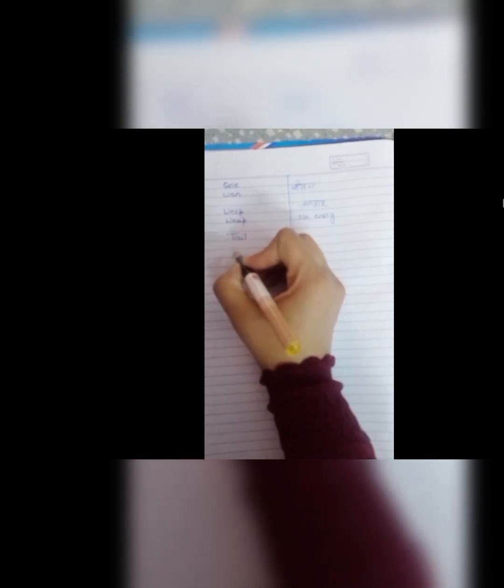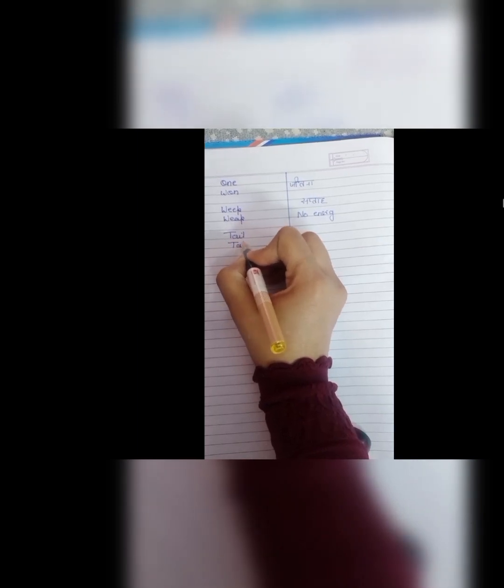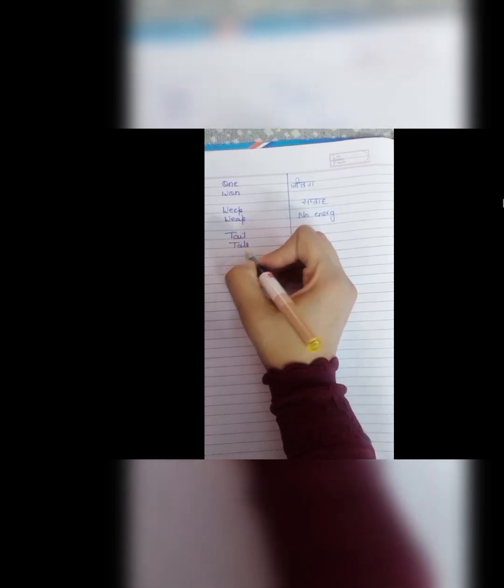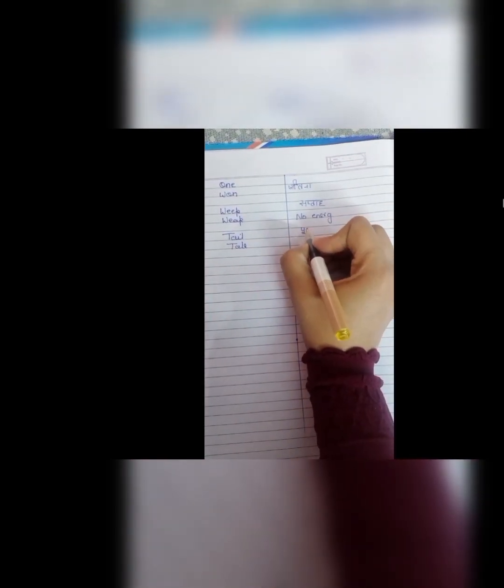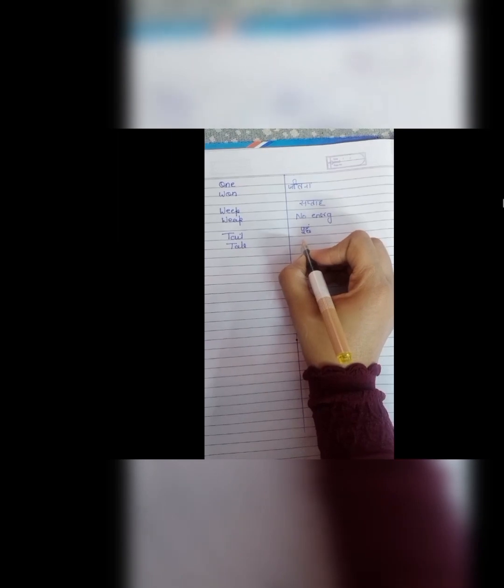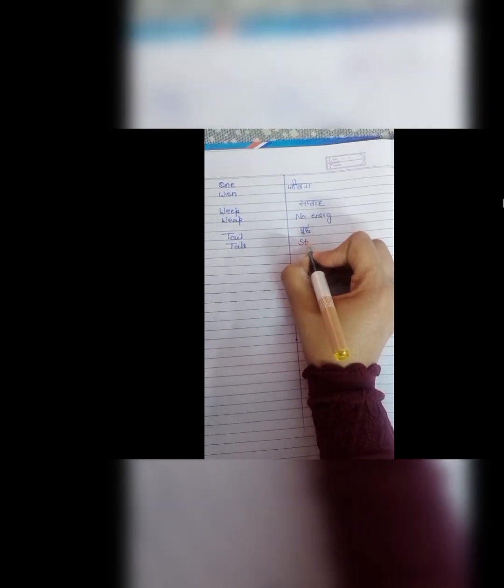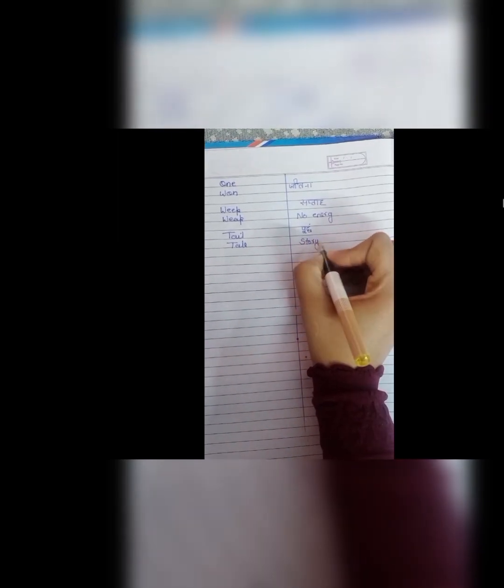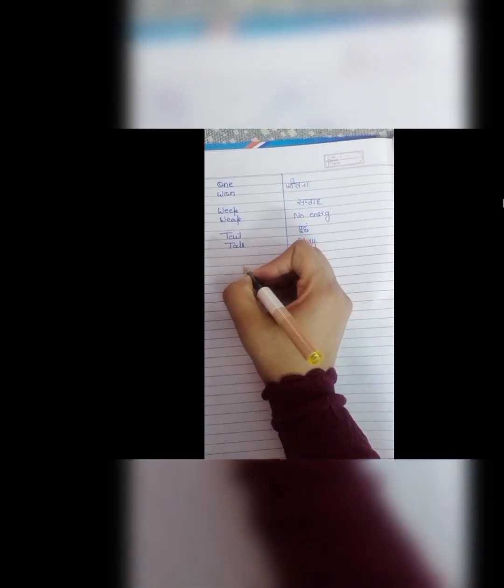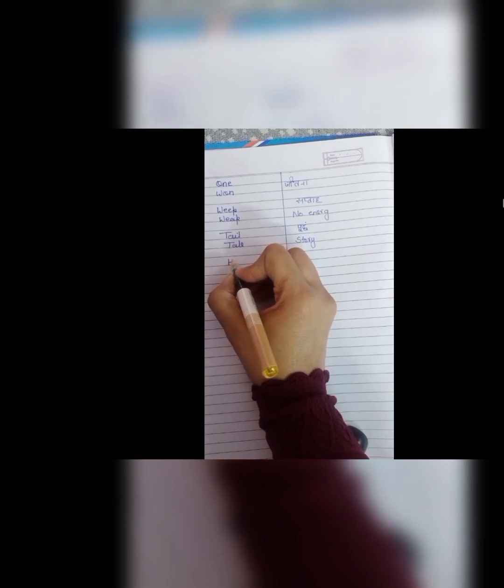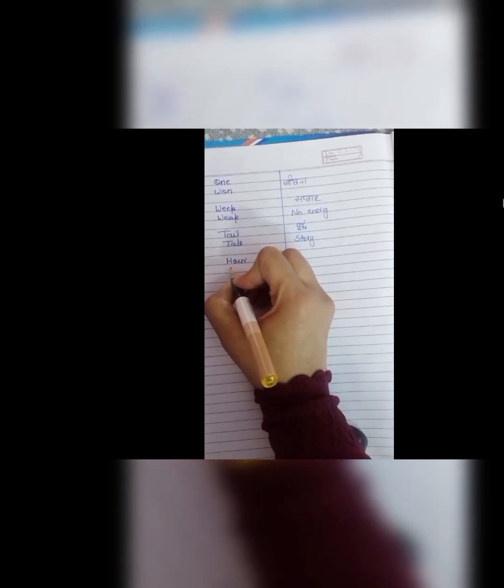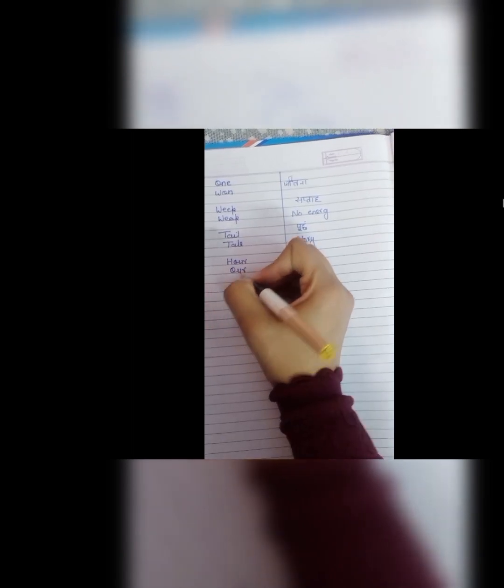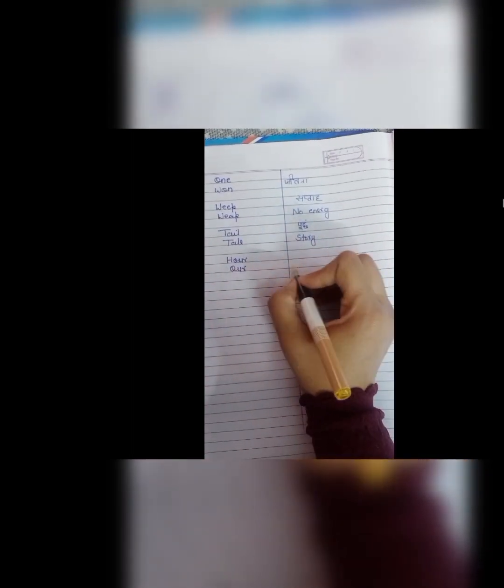Next is tail and tale. T, A, I, L, tail. Iska matlab hoota hai pooch. Jiasse monkey has a tail. And next iska homophone hoota hai tale. T, A, L, E, tale. Ye hoota hai story. So, tail and tale. Tale means kahani. Jiasse koji hume kahani suna ta hai. Toh woh hume tale suna raha hai.